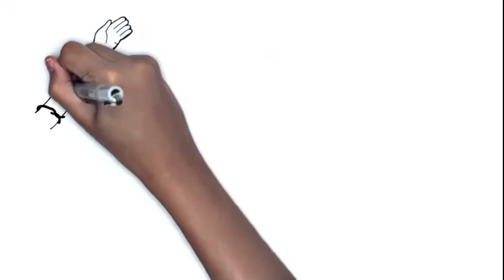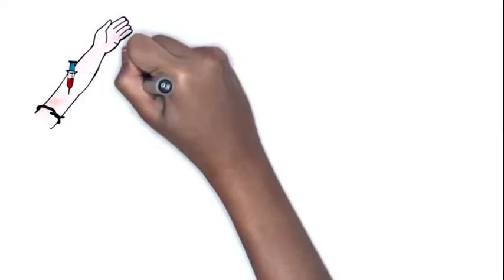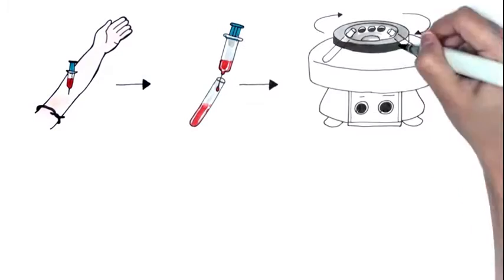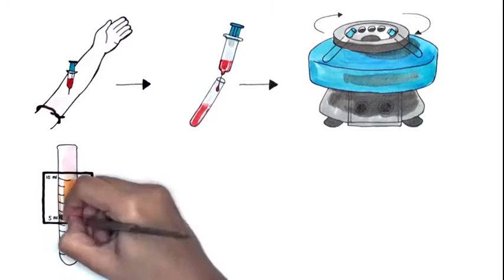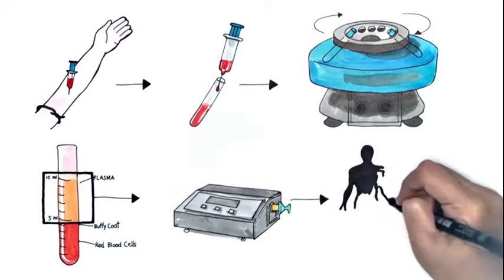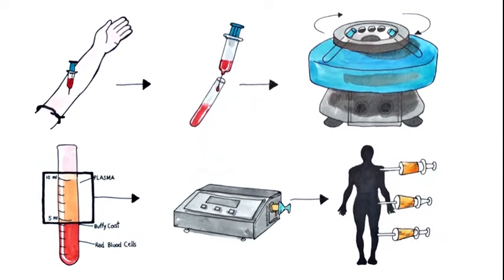PRP takes advantage of this process in a very simple way. A small amount of blood is extracted from the patient, then centrifuged to extract only the blood's platelets and plasma, photoactivated with light, and then injected back into the area of injury.